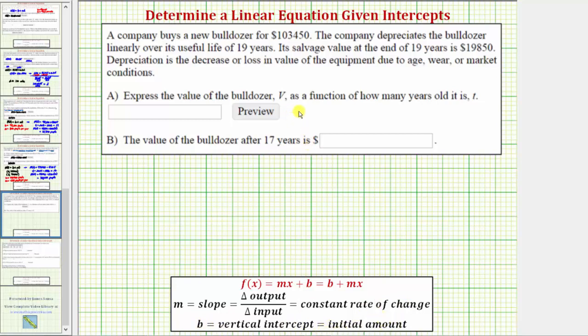But because our function is V(t), let's find the equation in the form V(t) equals, let's use this form here, so it would have b plus mt. Again, the input variable is t, not x.